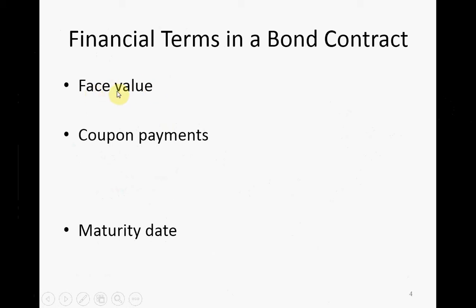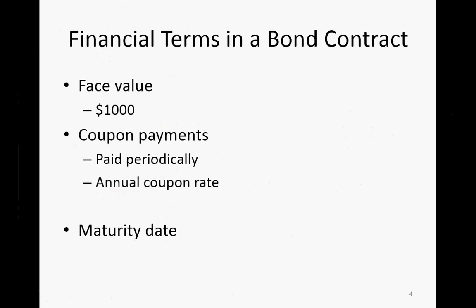From that certificate, you can see the face value, which is always $1,000 — the same 150 years ago as it is now. You also have a coupon payment, which is paid periodically. On the bond there is a coupon rate stated in annual terms, and you need to account for the frequency of payments — the coupon could be made twice a year, four times a year, or even every month. You also have a maturity date and a settlement date, and the period between them is the time to maturity.